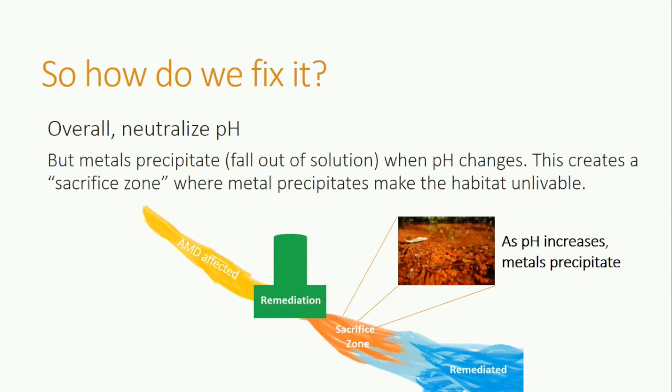But neutralizing the pH creates some problems of its own. As the pH increases, the dissolved metals precipitate out of solution. The precipitate covers the bottom of the stream, making the stream unlivable. This precipitate-covered, unlivable area is called the sacrifice zone.